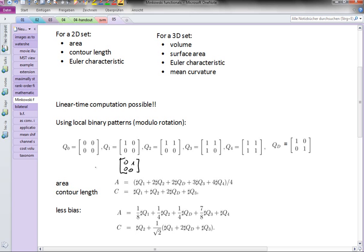A simple rule to compute the area would be to take the number of patches which are of type 1 plus twice the number of patches of type 2, because they have two active pixels, plus three times the number of patches of type 3, and so on.